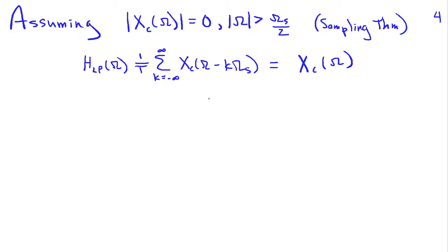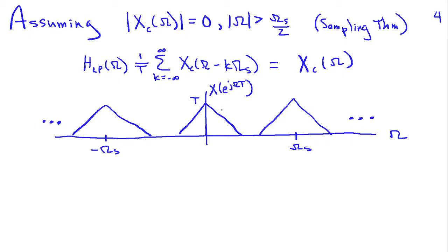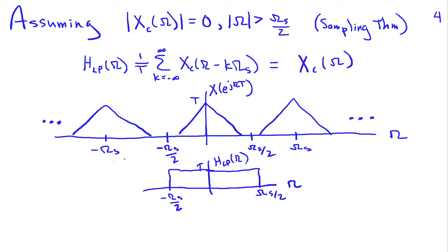Graphically, we can see this by sketching the Fourier transform of the sampled signal X(e^jΩT), which goes to zero by ωs/2. Multiplying by HLP, the 1/T cancels the T, and we recover the original continuous-time input spectrum — confirming that sampling and reconstruction work correctly when the sampling theorem is satisfied.